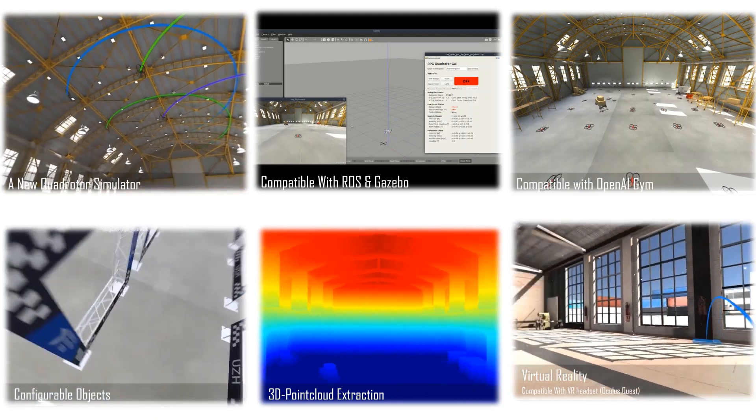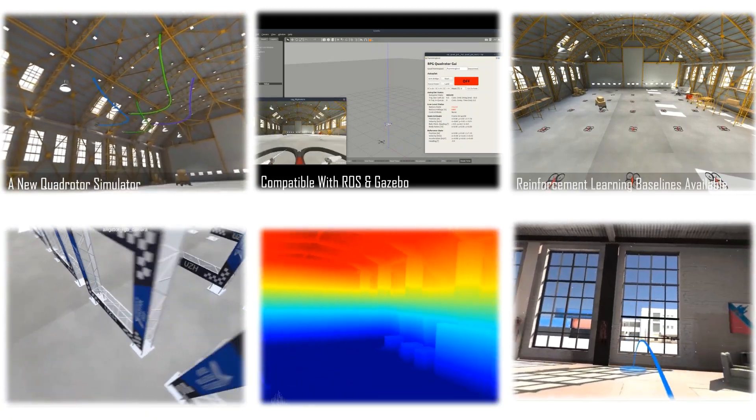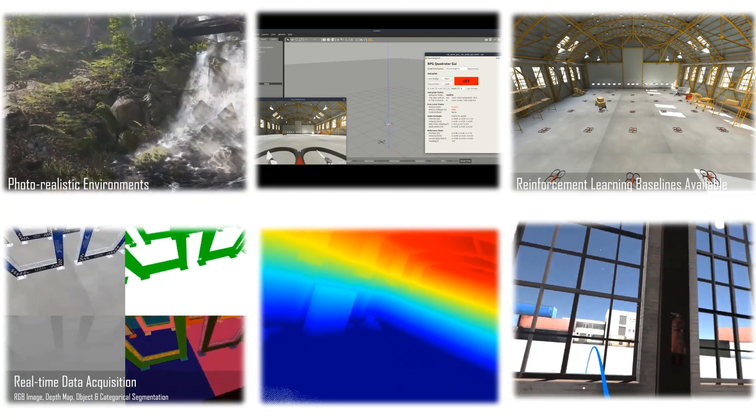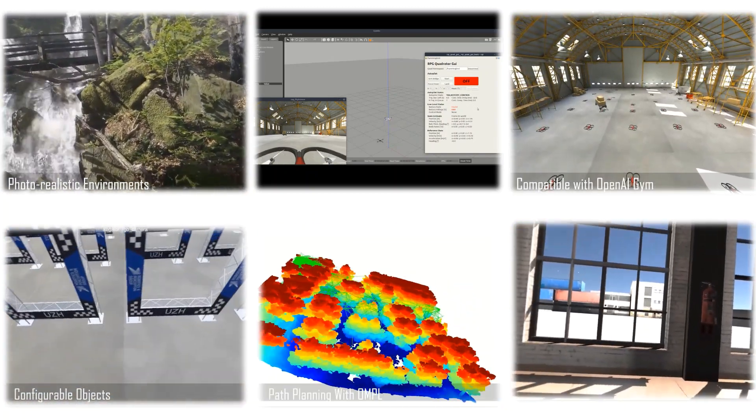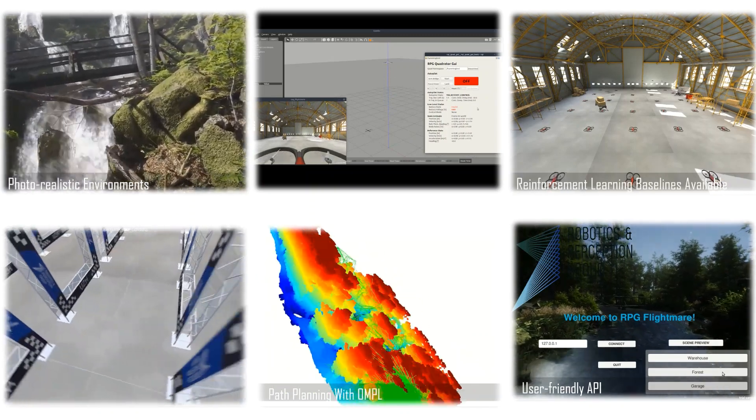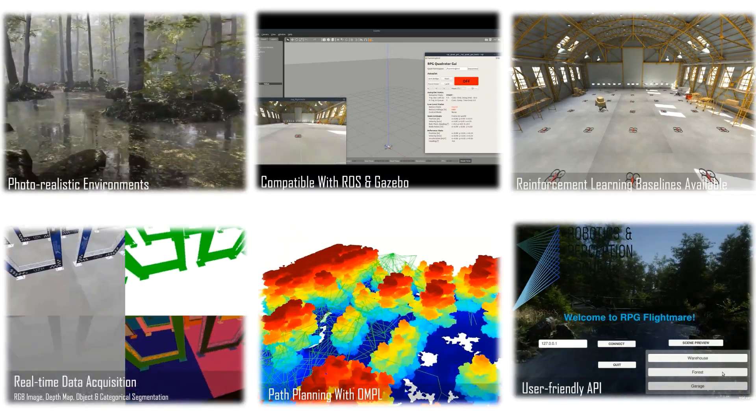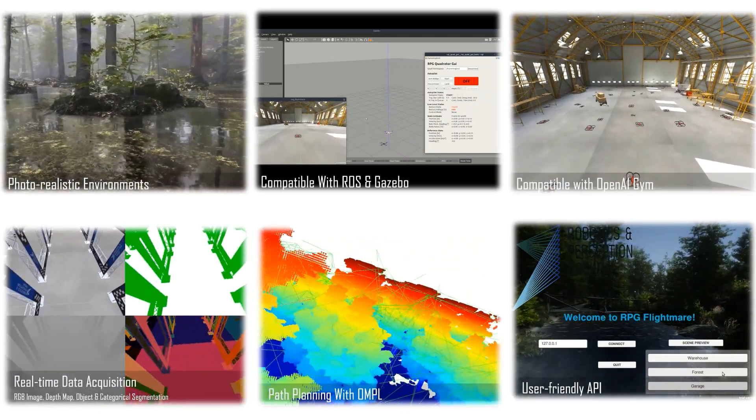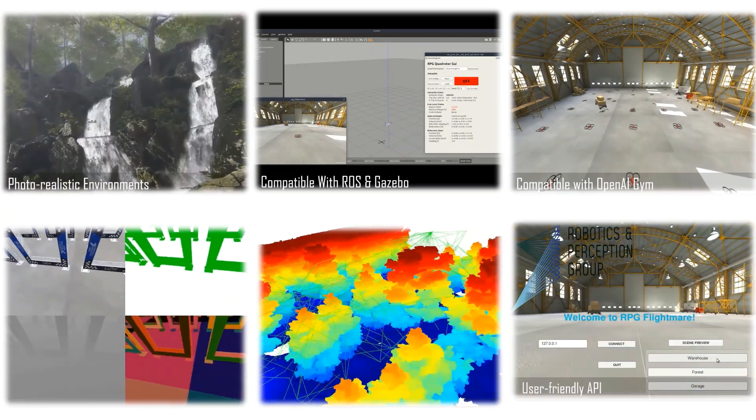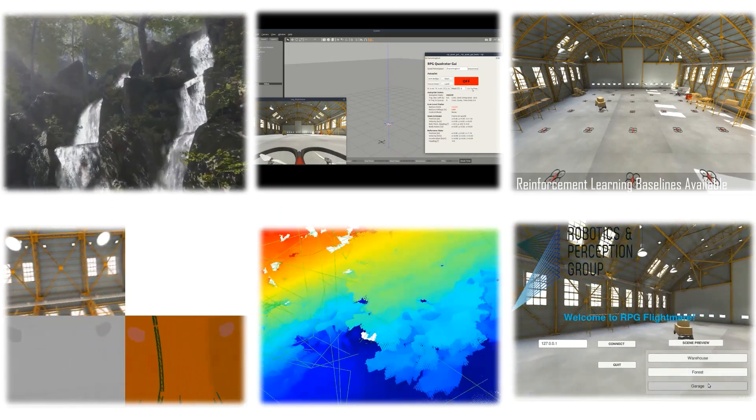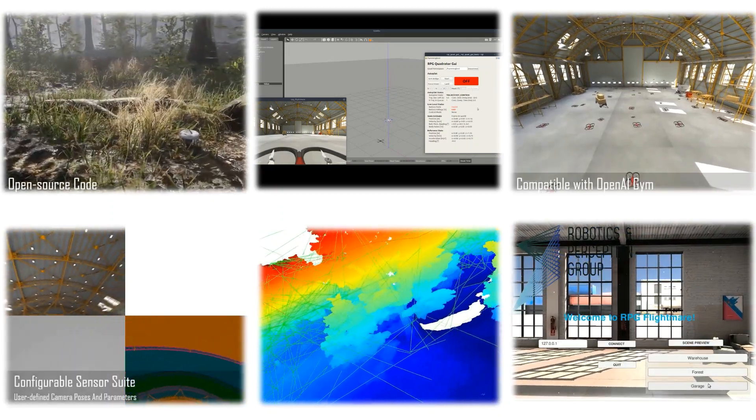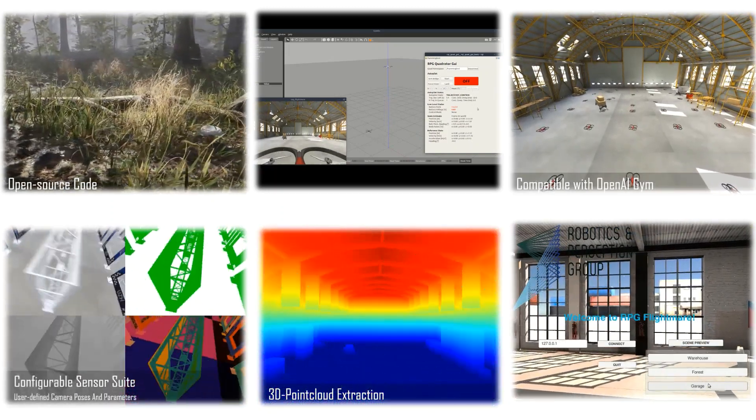Here is an overview of useful features provided by FlightMare. FlightMare is a photorealistic quadrotor simulator that is compatible with ROS, Gazebo, OpenAI Gym, and Stable Baselines. It provides an interface for easily configurable objects, high-fidelity sensor simulations, 3D point cloud extraction. It also supports virtual reality hardware such as Facebook Oculus Quest.